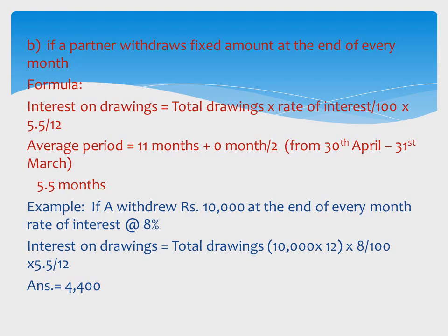In this case, the first drawing is made at the end of every month, so the first drawing is on 30th April. From 30th April to 31st March, there are 11 months. The last drawing is made at the end of the last month, which is 31st March, so no time is left — 0 months. Therefore, (11 + 0) / 2 = 5.5 months.